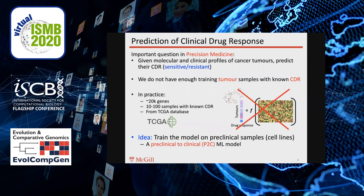One of the major questions in precision cancer medicine is predicting whether a patient is sensitive or resistant to a specific drug using their molecular and clinical profiles. Machine learning provides us with the tools to perform this task, and ideally we would like to train a machine learning model on data corresponding to real tumors.